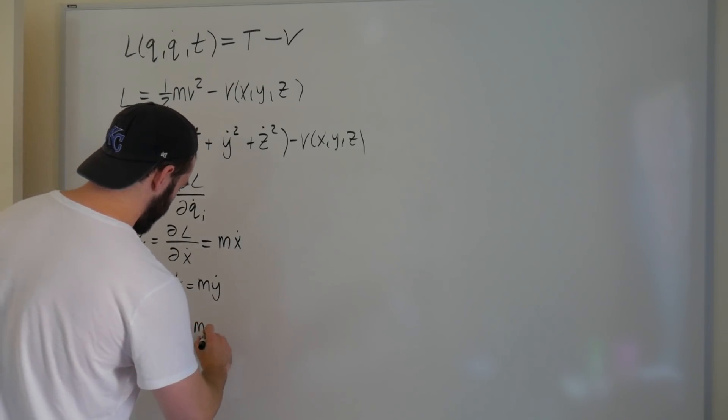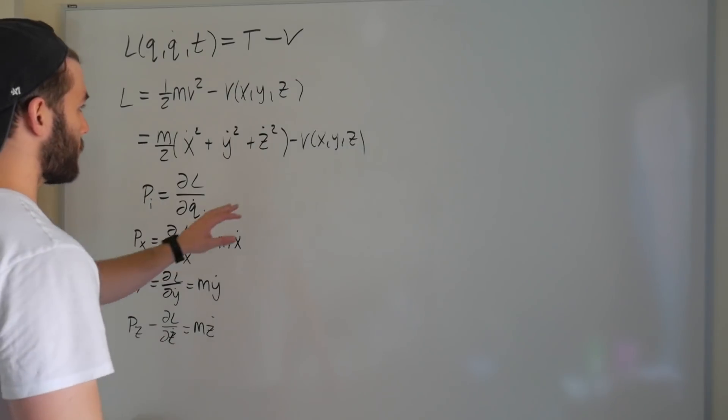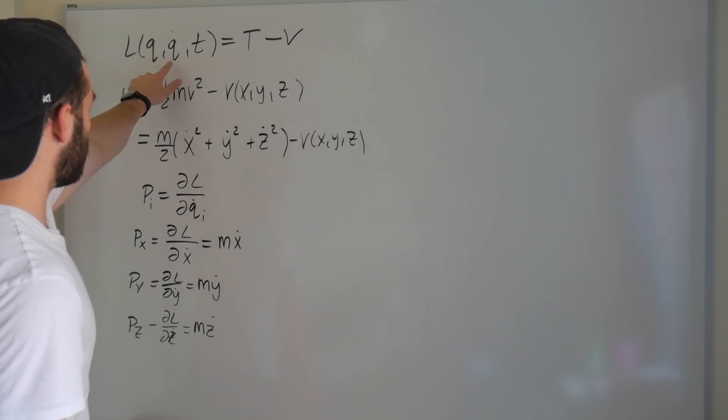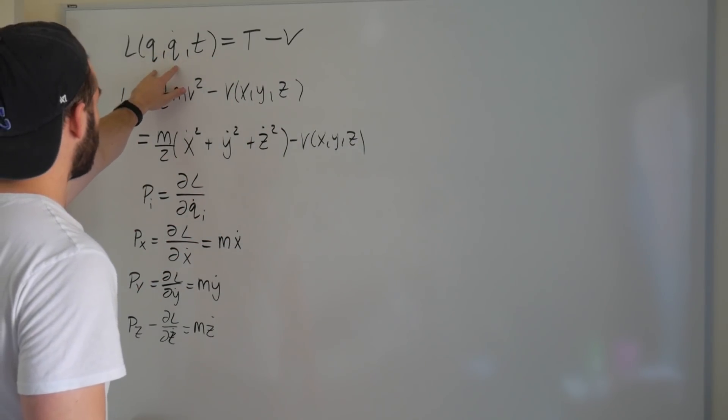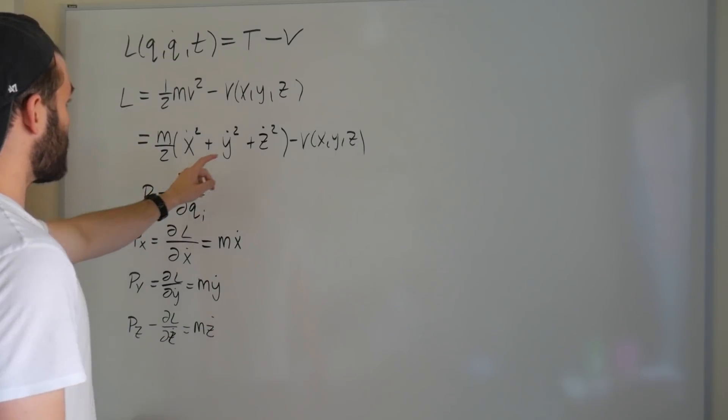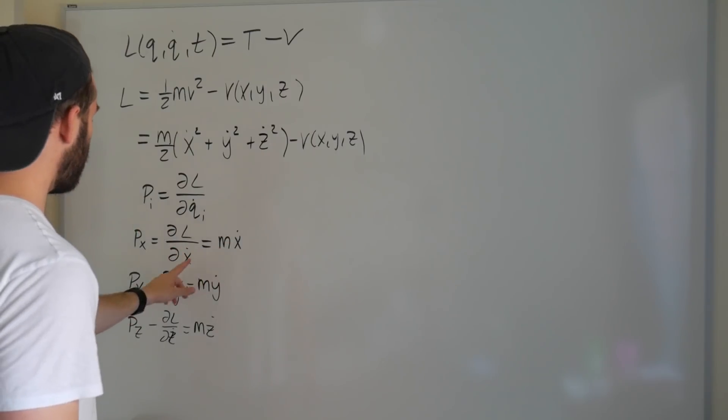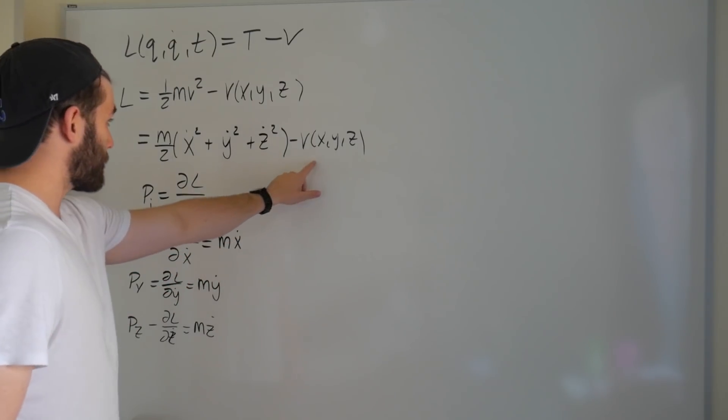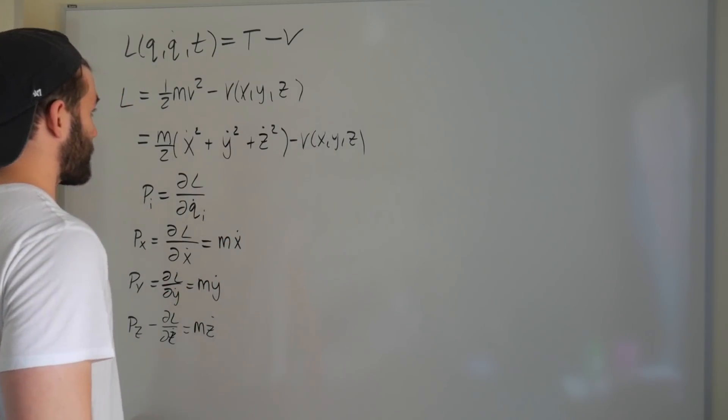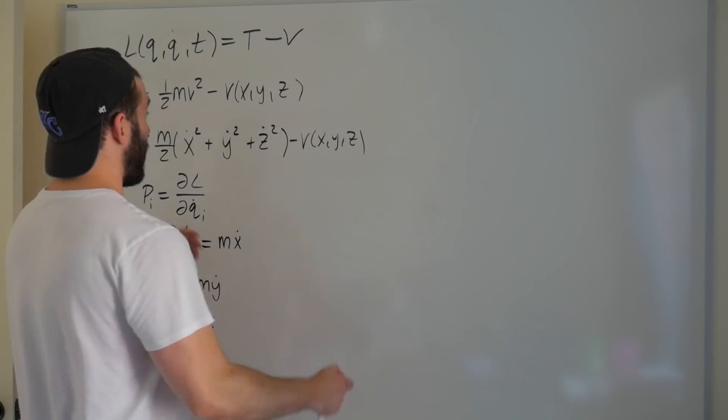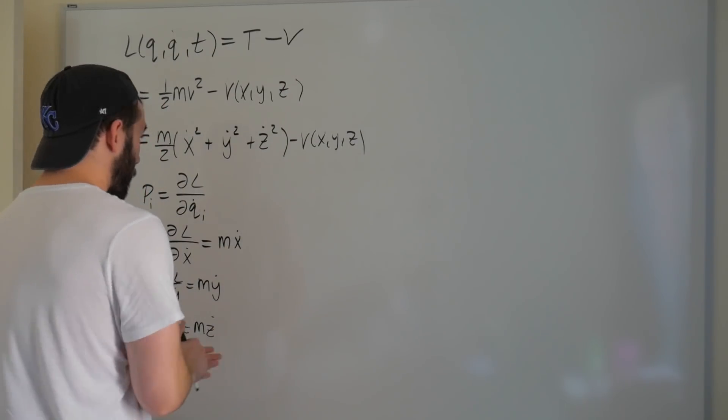pz is equal to dL dz dot, which is equal to m z dot. And the reason we can do this is we assume that the position and the generalized velocity are independent variables, which means when that d/dx dot attacks this potential, it goes away, because x is independent of x dot. There we go. Works.